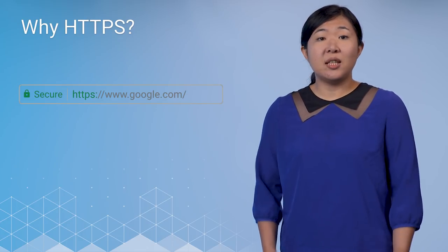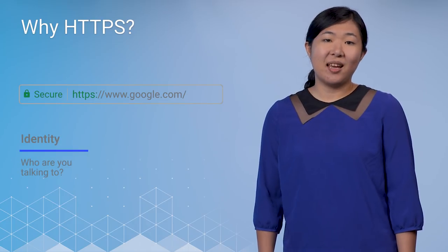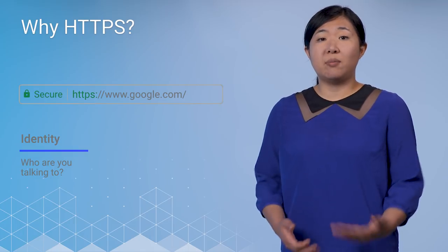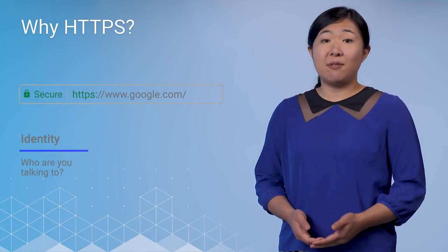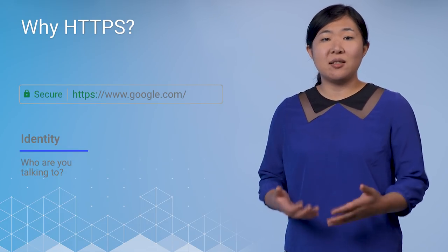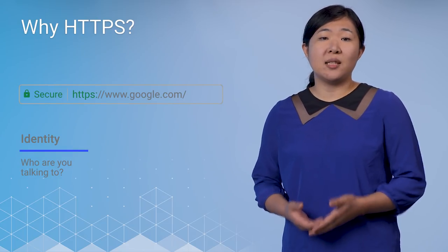Having a secure connection really means three things. The first is Identity. When you type https://google.com into your browser, your browser receives a cryptographic proof of identity from the server called a certificate. The browser uses that certificate to prove that it's talking to the real google.com, not some other server pretending to be google.com. So when you type a URL into your address bar, the browser gets proof that it's the real domain you are talking to.